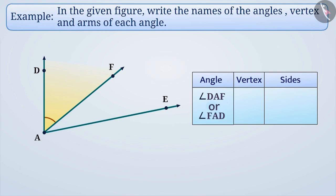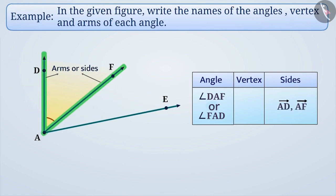The two rays that make an angle are called the arms or sides of the angle. The arms or sides of angle DAF are ray AD and ray AF. Similarly, the common starting point of the rays is called the vertex of the angle. So A is the vertex of angle DAF.